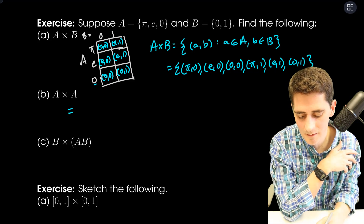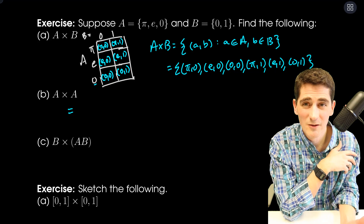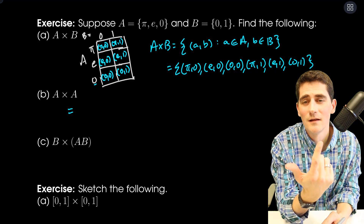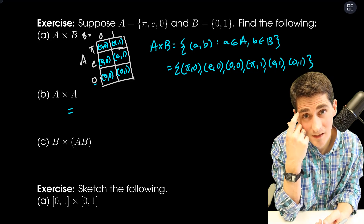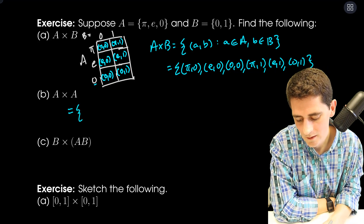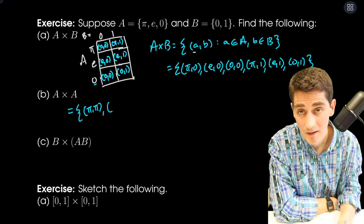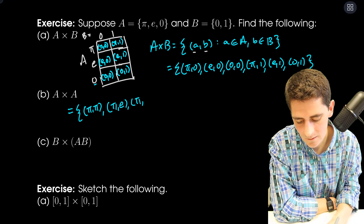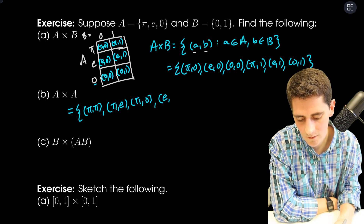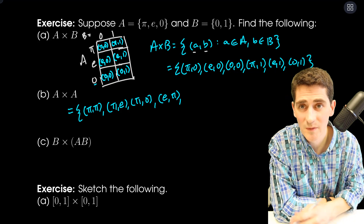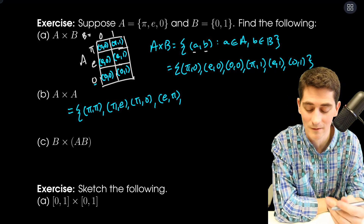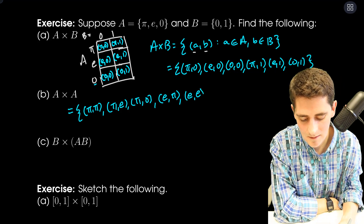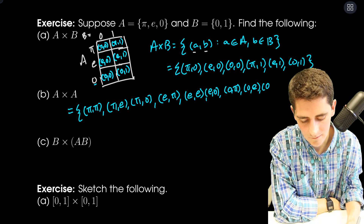It's kind of like adding a dimension — we turn a set into an array. If I do A × A, how many things will be in this set? A has three things in it, A has three things in it, so I get three times three: nine things. So: (π,π), (π,E), (π,0), (E,π) — wait, are (π,E) and (E,π) different? Yes, because these are ordered pairs and the order does matter. So: (E,π), (E,E), (E,0), (0,π), (0,E), (0,0).